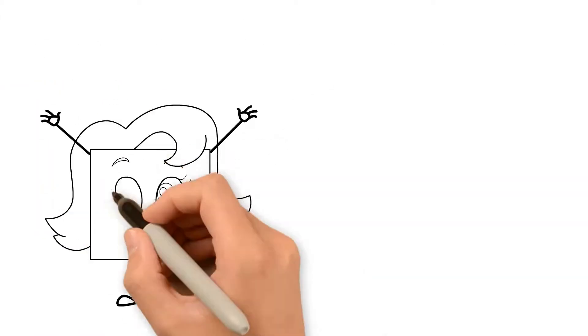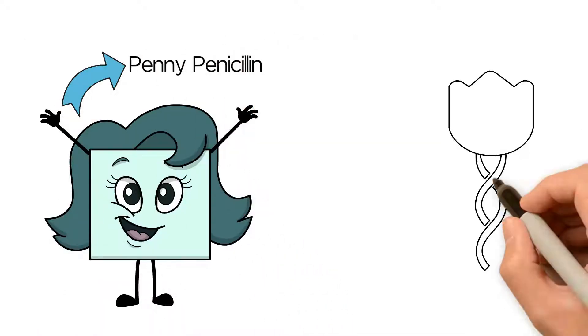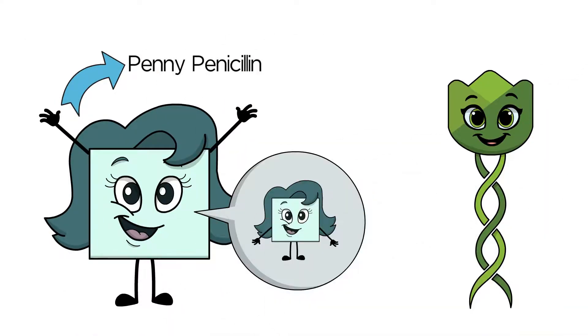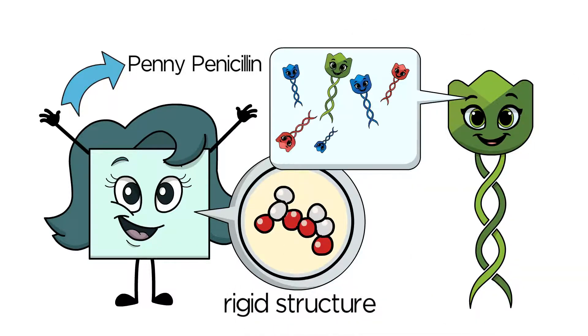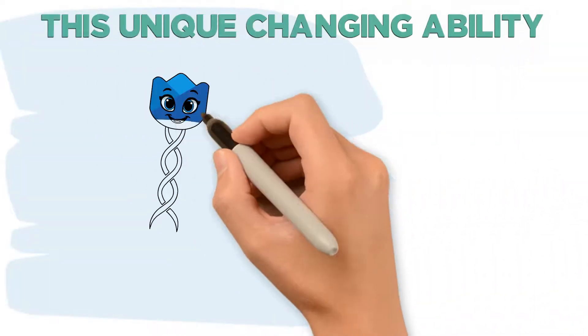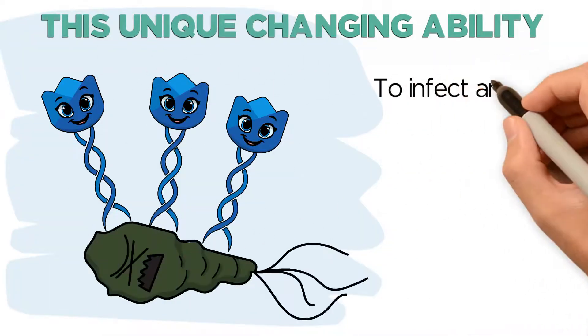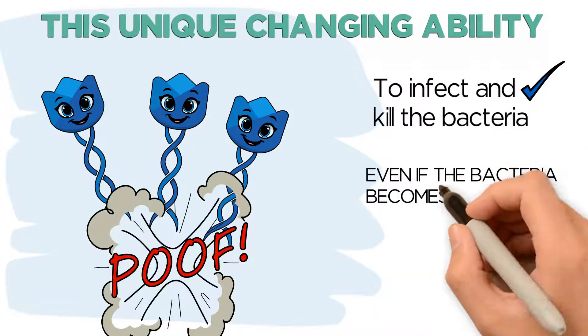Taylor's friend is Penny Penicillin, an antibiotic. Unlike Taylor, Penny has a hard time changing because of her rigid structure. Whereas Taylor can easily change. This unique changing ability allows Taylor to overcome resistance to infect and kill the bacteria, even if it becomes resistant to Taylor.